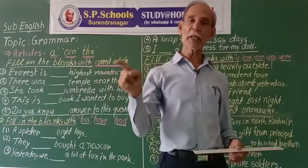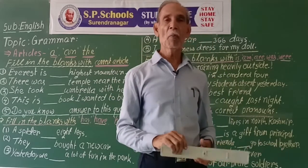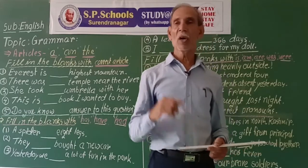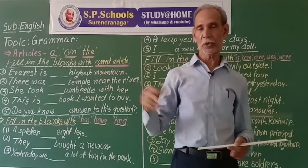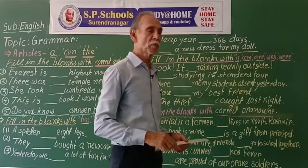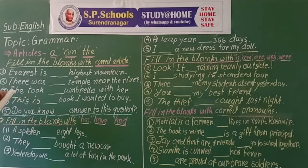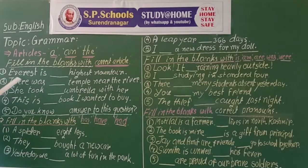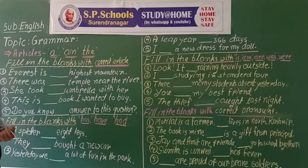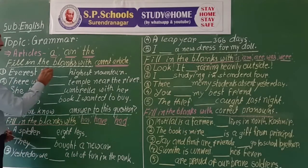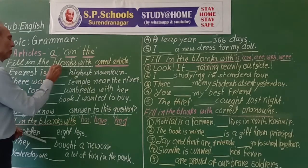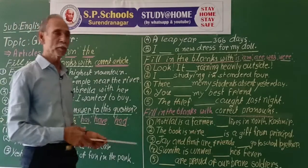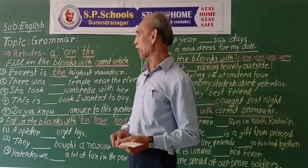One out of so many — we give article 'a' or 'an'. For example, 'a cow' means one cow out of so many cows. Now fill in the blanks with the correct article: 'a', 'an', or 'the'. Here, Everest is the highest mountain, so there will be article 'the' because it is only one. Everest is the highest mountain.